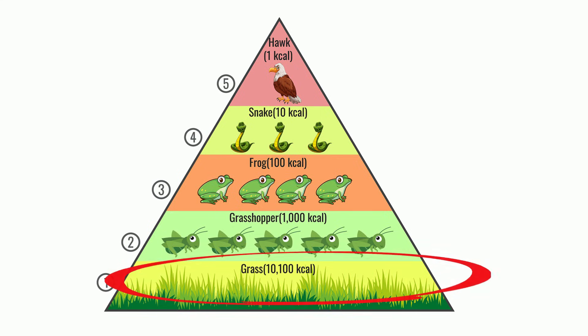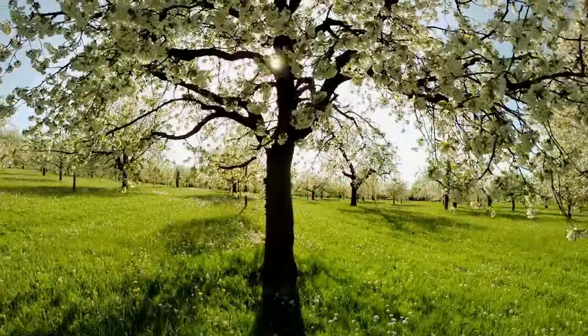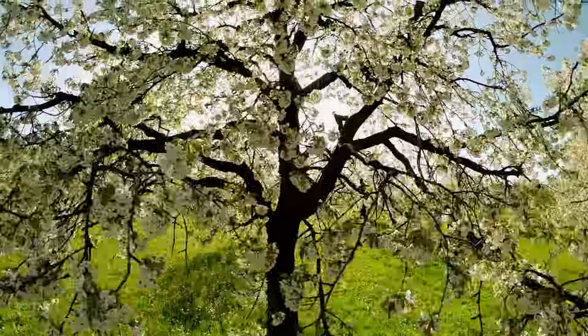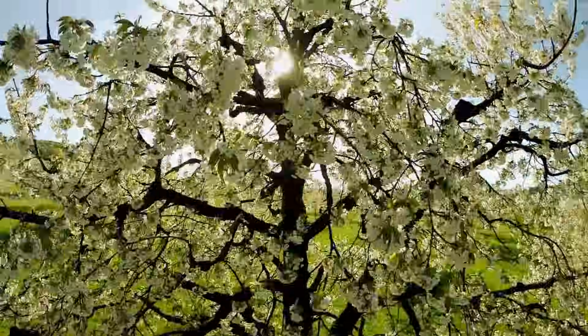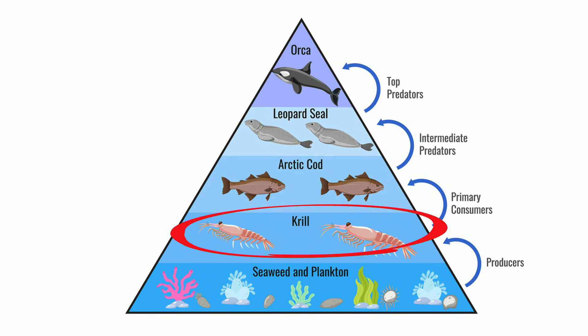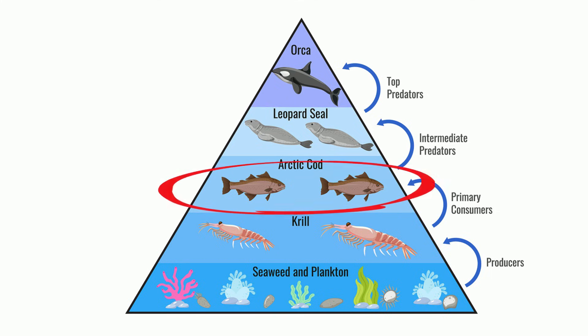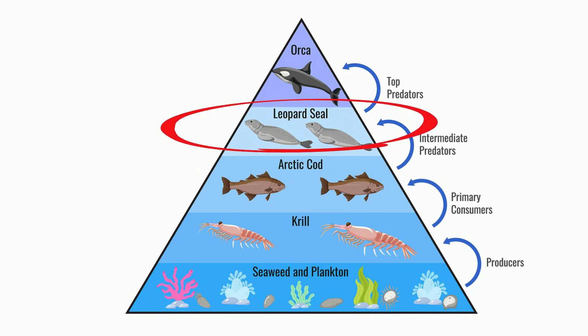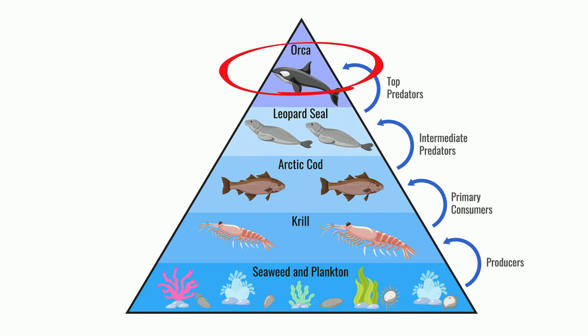Producers, which use photosynthesis or chemosynthesis to create their energy, are a major source of energy in any ecosystem. All plants are examples of producers. Consumers like the krill eat the producers. Carbon bonds are broken and energy is released, and this energy is transferred from one trophic level to another. The cod eat the krill and the energy of the krill is passed on to the cod. The seal eats the cod and then the orca eats the seal.